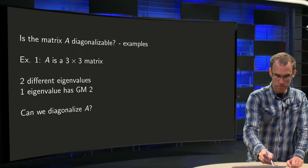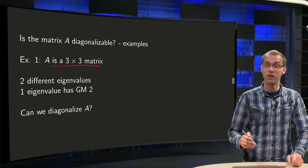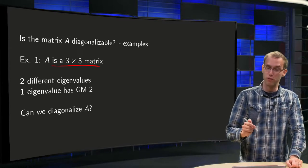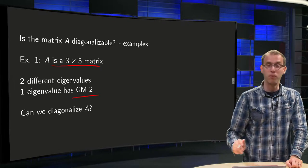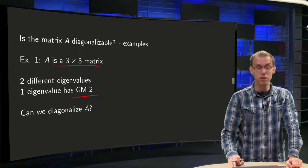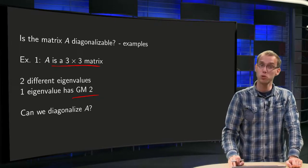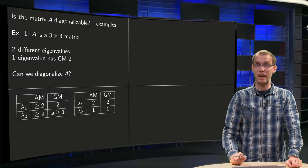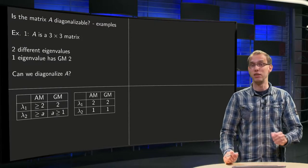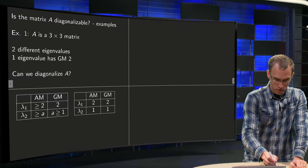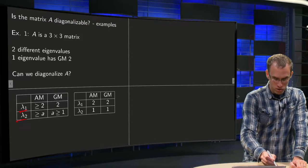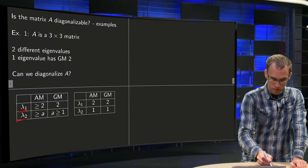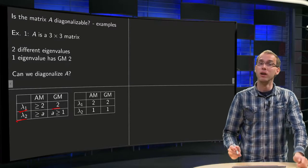First example: suppose A is a 3x3 matrix given two different eigenvalues, and furthermore that we know that one eigenvalue has geometric multiplicity equal to 2. Can we diagonalize the matrix A? Let us summarize this in a small table. We have two eigenvalues, lambda 1 and lambda 2, and we know that the geometric multiplicity of one of them equals 2.